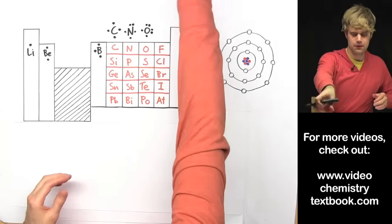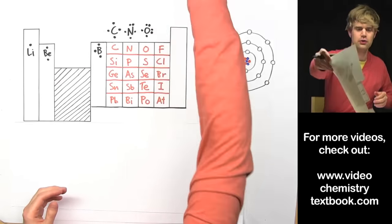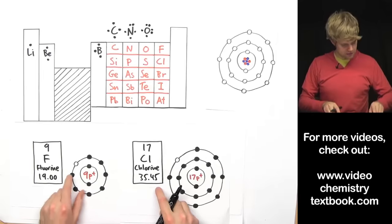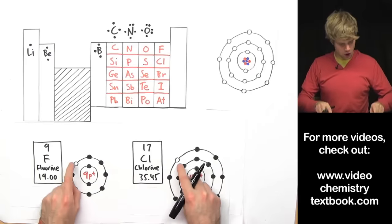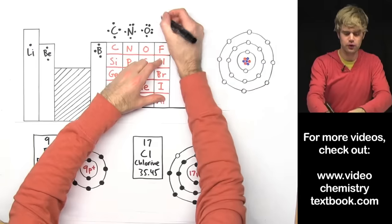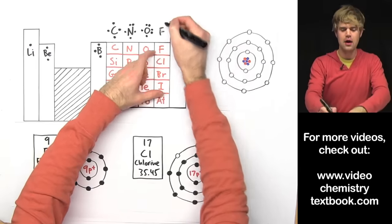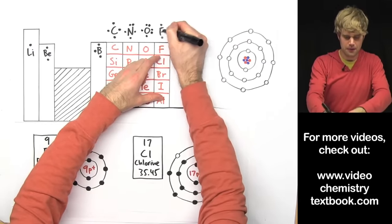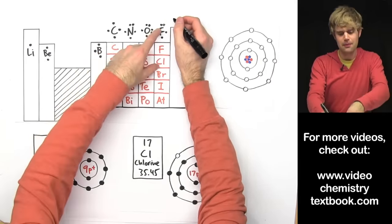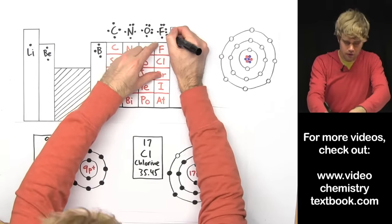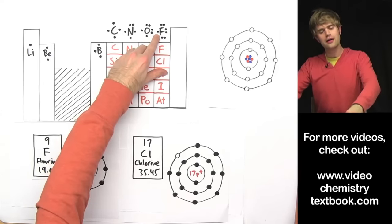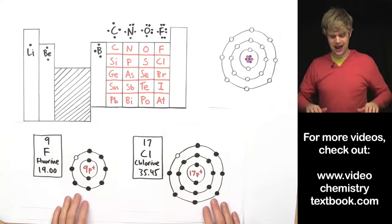For the column with fluorine and chlorine, both of these have seven valence electrons, which means the valence shell is almost full except for one empty spot. Using fluorine as the example: dot on top, bottom, left, right — then double up on top, double up on the right, and double up on the bottom. That leaves just one unpaired dot on the left.